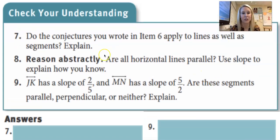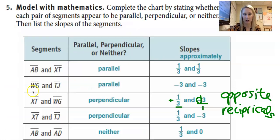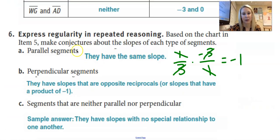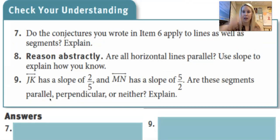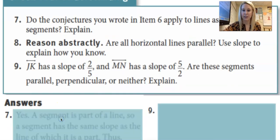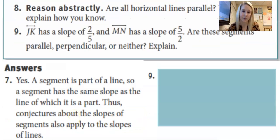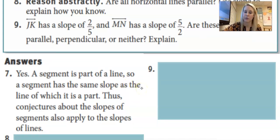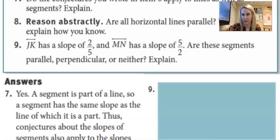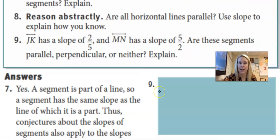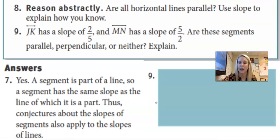Answer. Number seven. Did the conjectures you wrote in item six apply to line segments as well? So number six, we said parallel have the same slope, perpendicular are opposite reciprocals, etc. Does that apply to a line segment with endpoints? And the answer is yes. So a segment's a part of a line. Segment's going to have the same slope of the line. Therefore, all the stuff that we talked about for slopes will apply to segments.